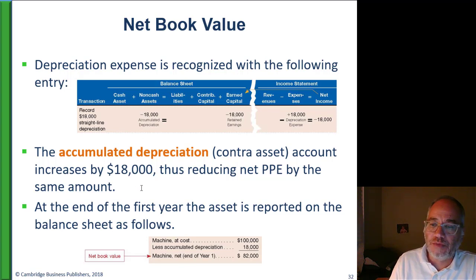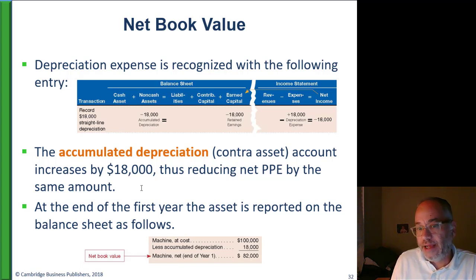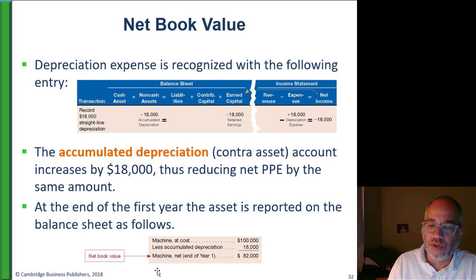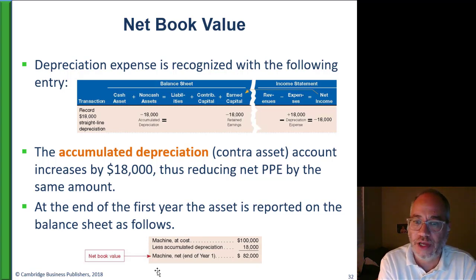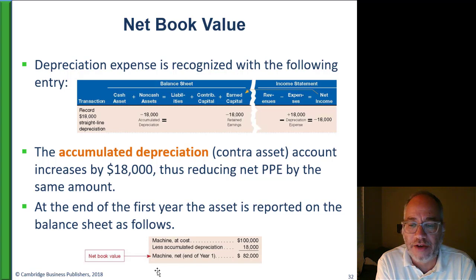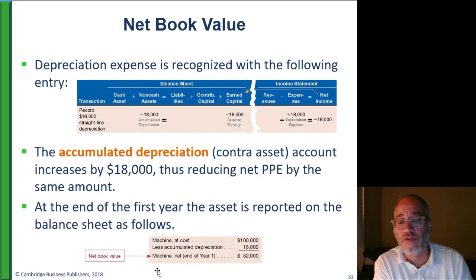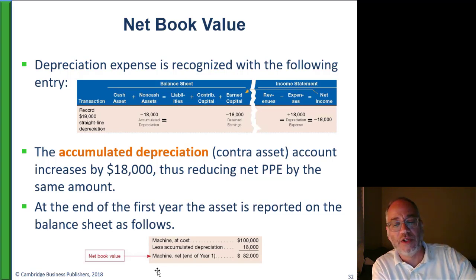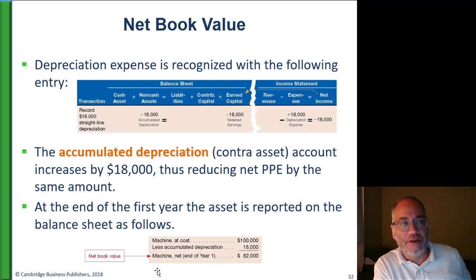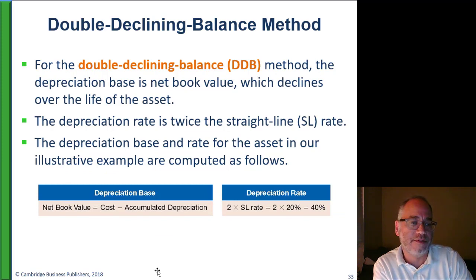This can be used to determine book value. Depreciation expense is recorded as a debit to depreciation expense and a credit to accumulated depreciation. Accumulated depreciation reduces your non-cash assets, and depreciation expense increases your expenses. Accumulated depreciation would increase by $18,000, reducing PP&E by $18,000. So the net book value equals cost minus accumulated depreciation: $100,000 minus $18,000. After the first year of straight line, this machine has a net book value of $82,000.